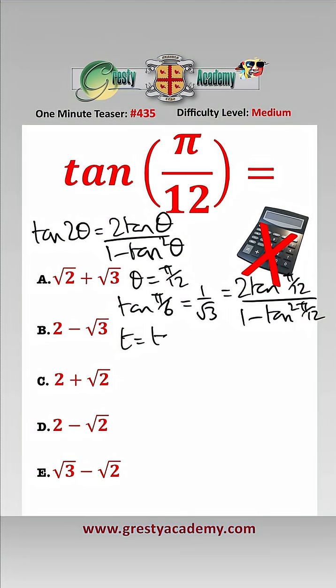To save writing, let's just let t equal tan of π over 12, and so therefore we get 1 over root 3 is equal to 2t over 1 minus t squared.